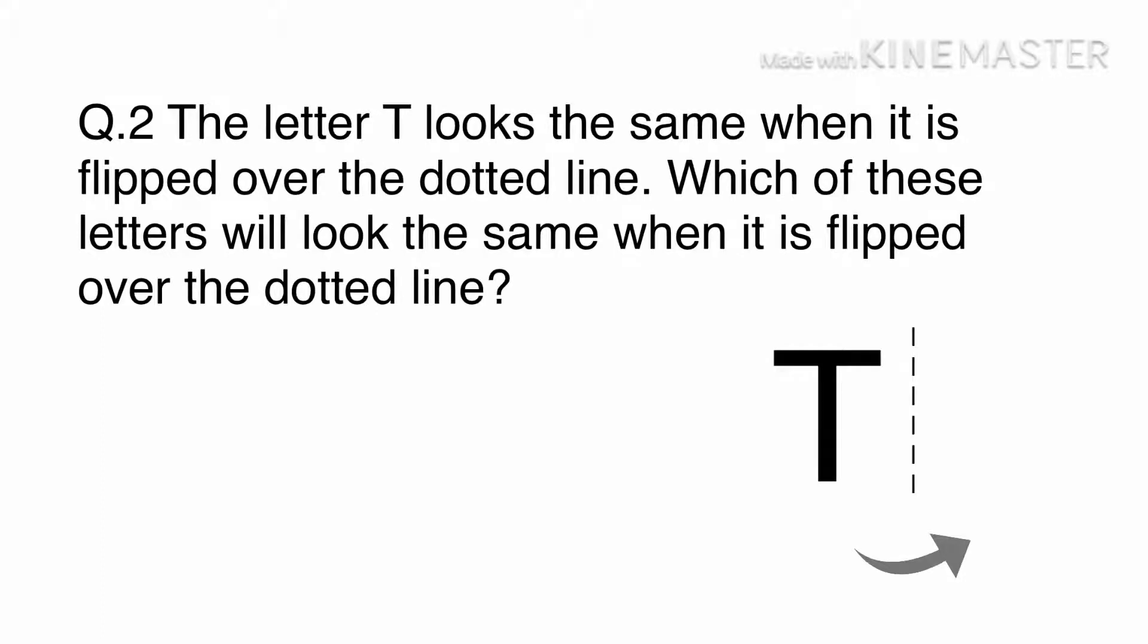Question 2: The letter T looks the same when it is flipped over the dotted line. Which of these letters will look the same when it is flipped over the dotted line? A. C, B. M, C. Z, or D. P. M is the only one in the choices that looks exactly the same when it is flipped over the line. The answer is B, M.